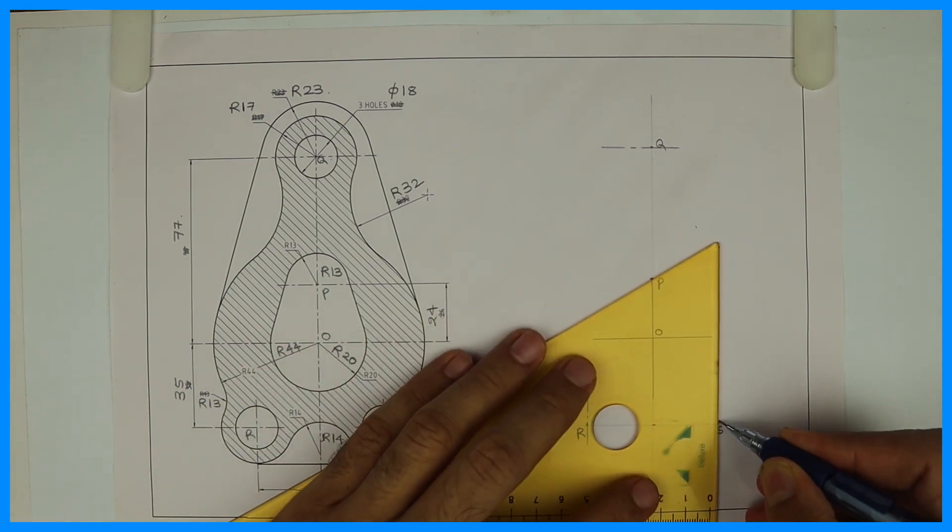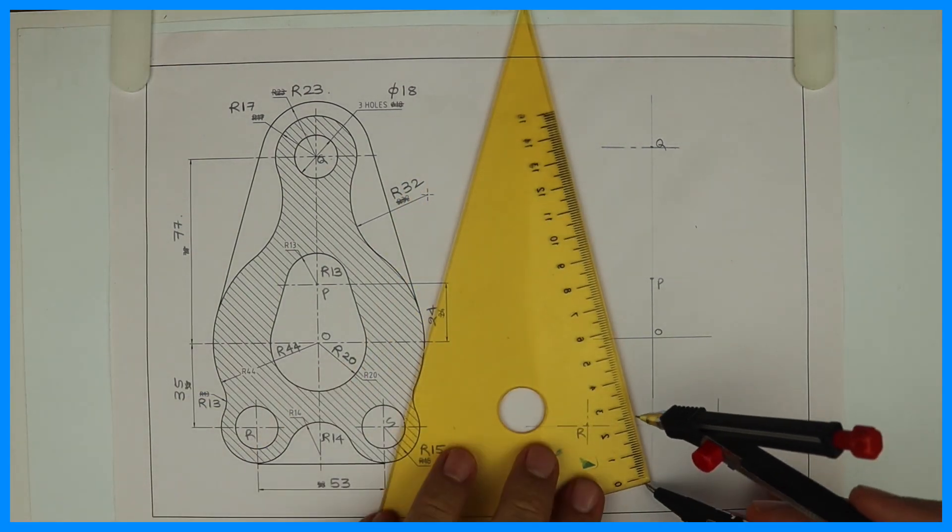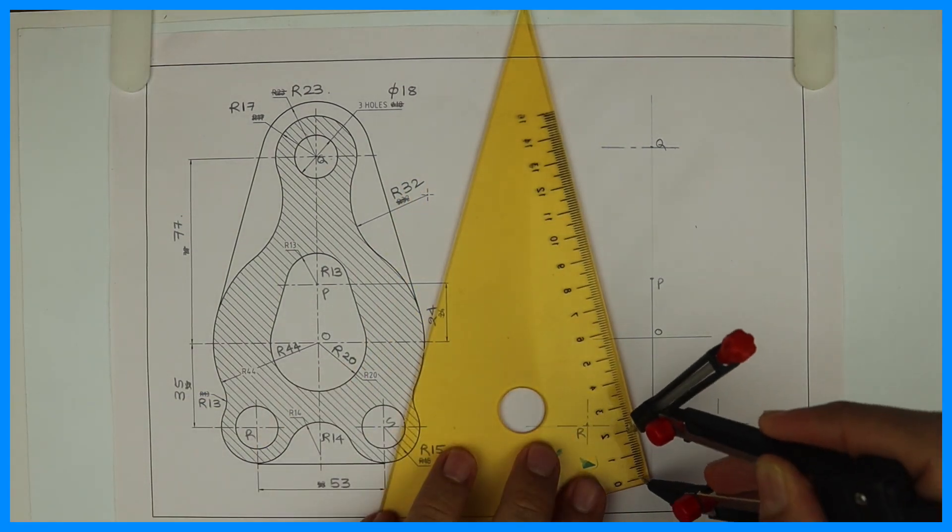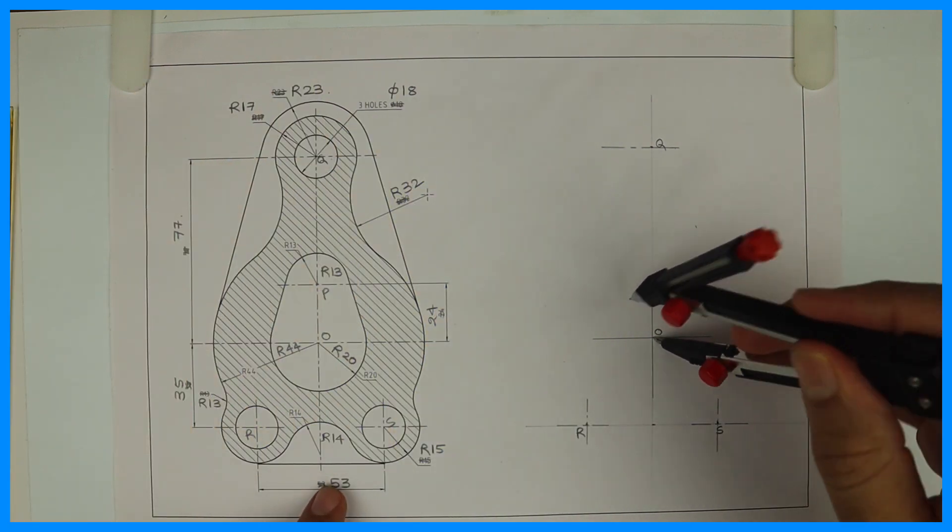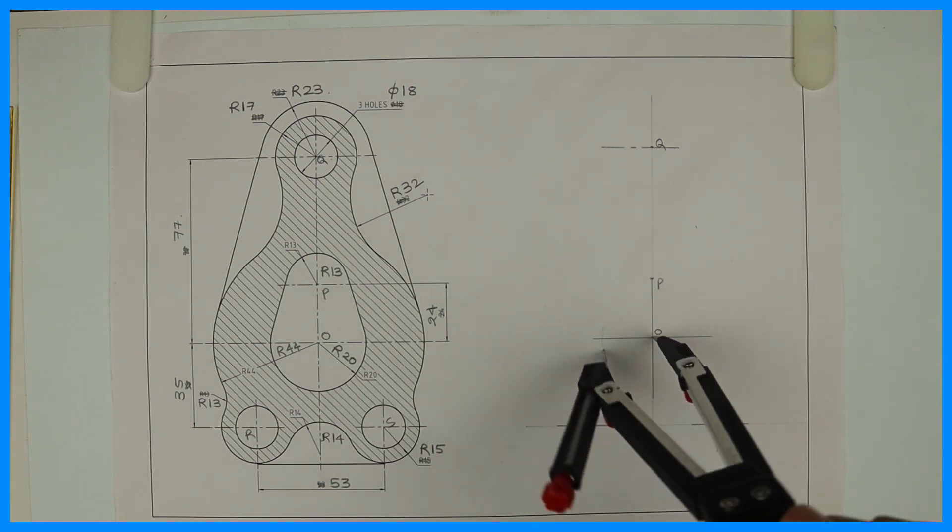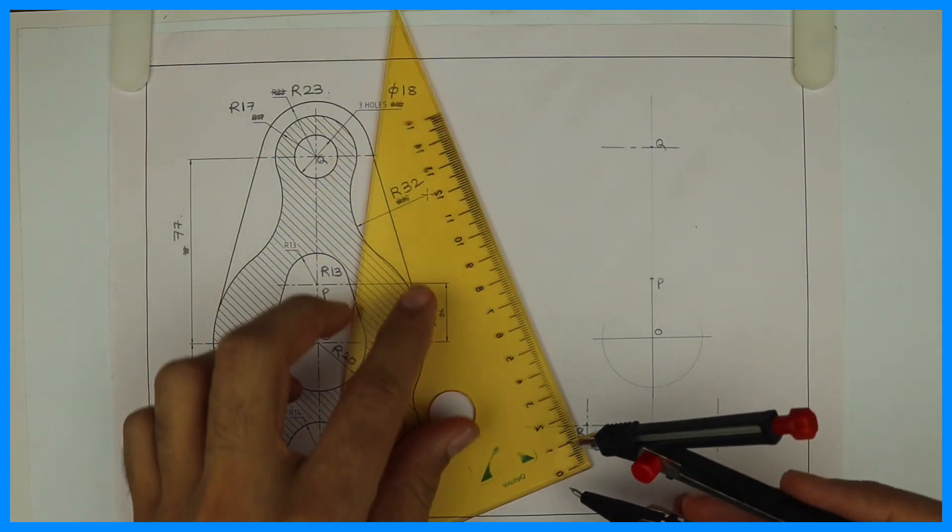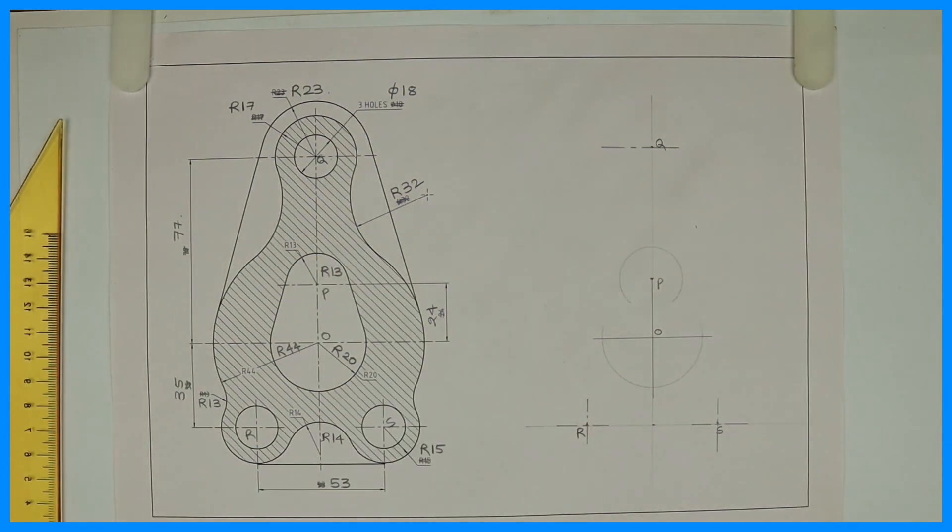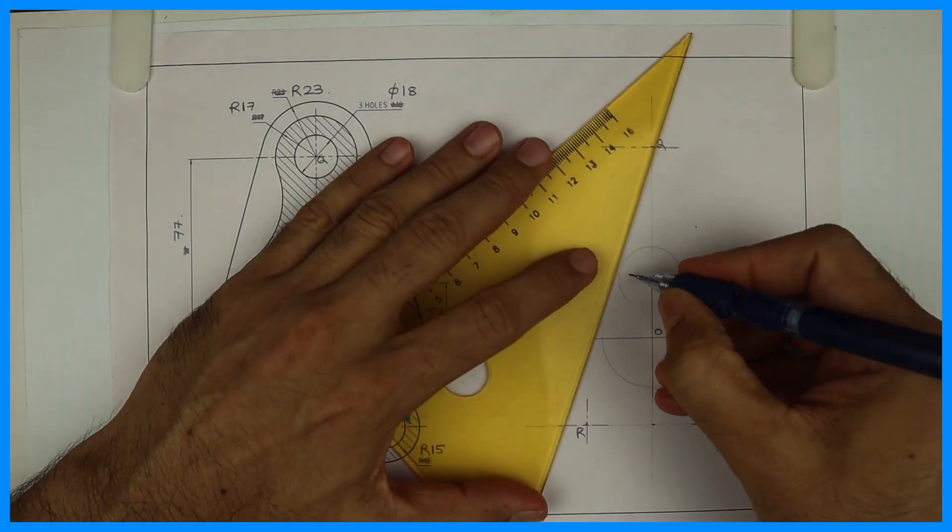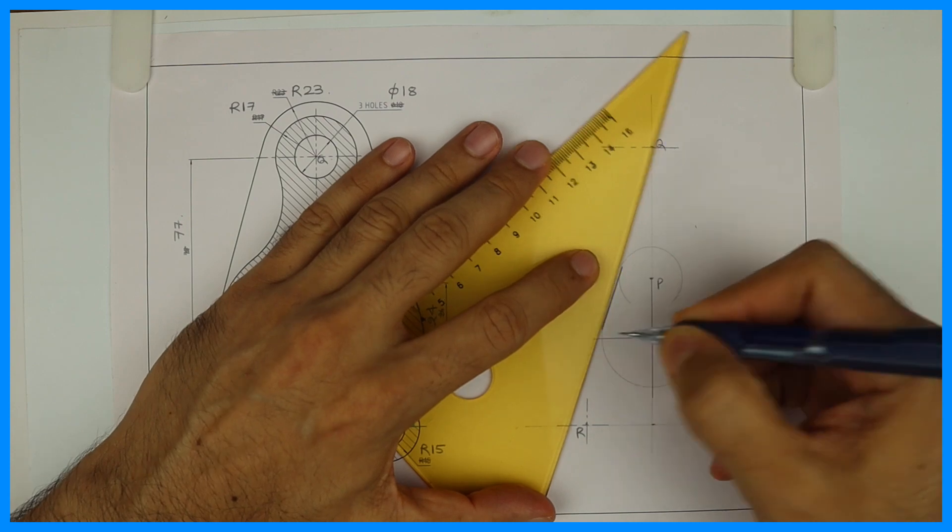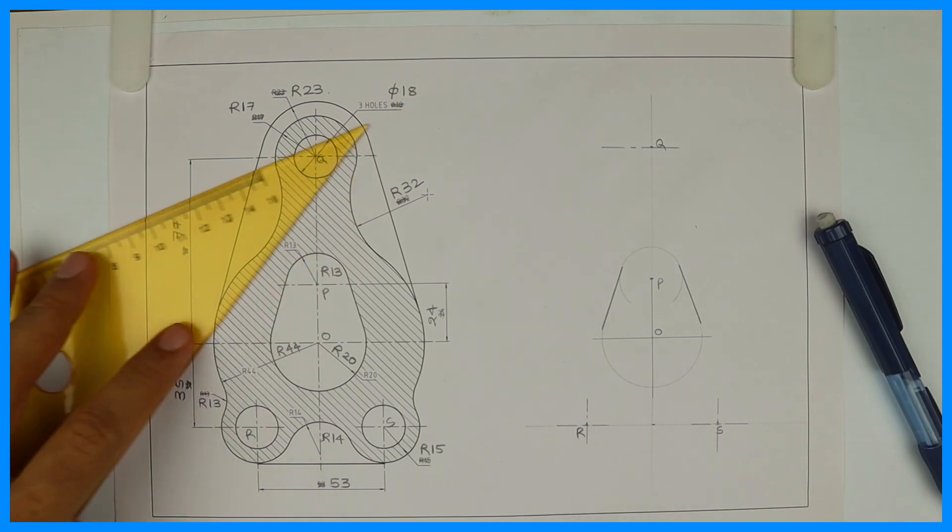Now I am drawing axis line. Now I will take radius 20 and we will draw radius from O. And radius 13 from P. Then we will draw tangent to these two circles.